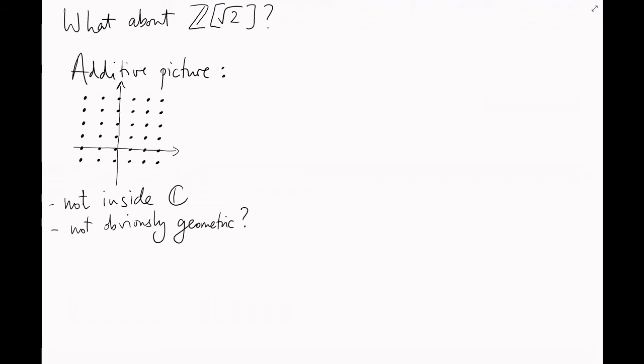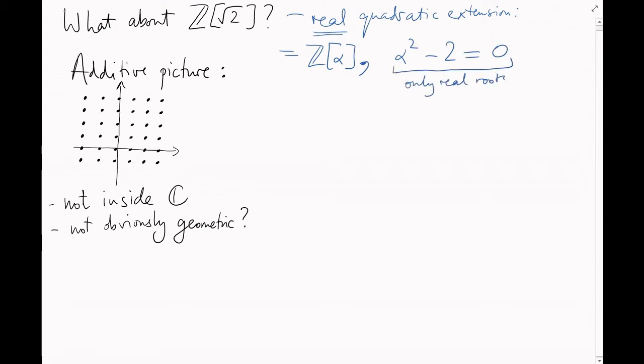The problem is that Z root 2 is a real quadratic extension. That is, the element alpha we've adjoined, this square root of 2, is defined by the equation alpha squared minus 2 equals zero, and both of the roots of this polynomial are real. That means that all possible embeddings of Z root 2 into the complex plane actually squash it down onto the real line.